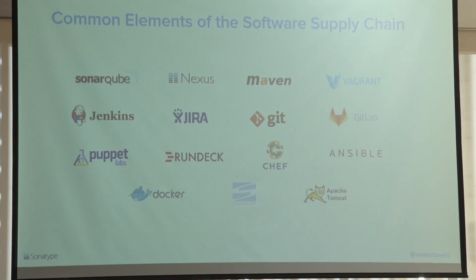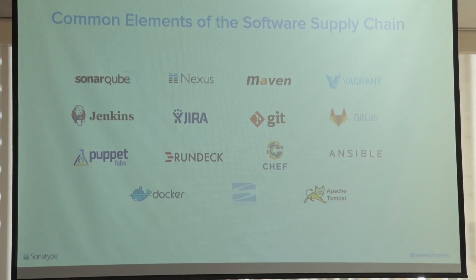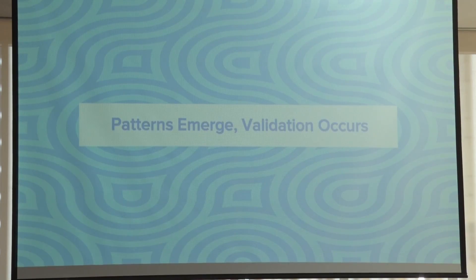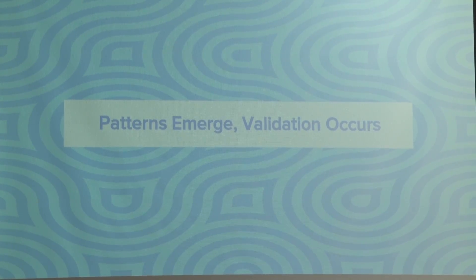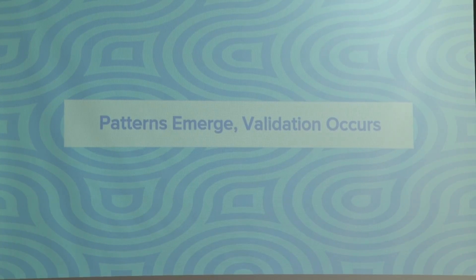We can also see commonalities in the tools across these environments — whether that's Rundeck, Puppet, Chef, Subversion, Nexus, or Vagrant. Those commonalities help you ask: does this environment look like mine? Does this look like what we want to achieve in our own organization? And how do I learn from the patterns that others have shown and communicated?